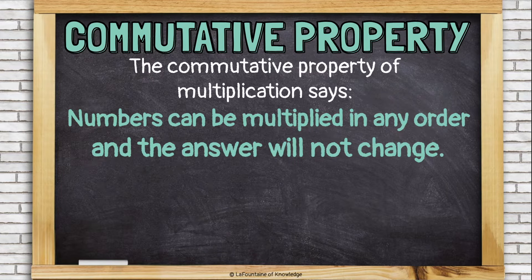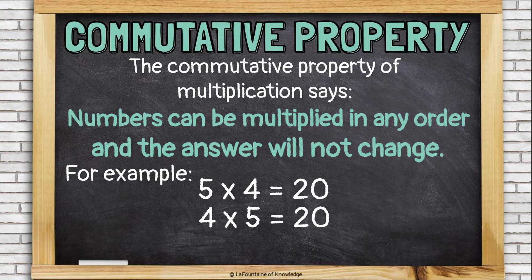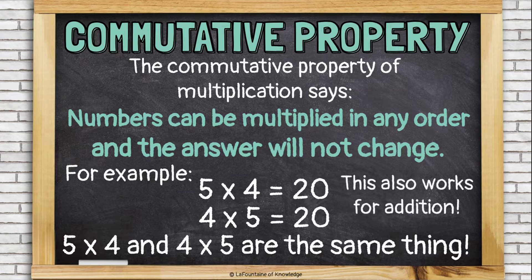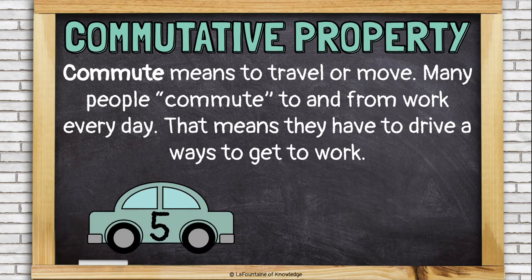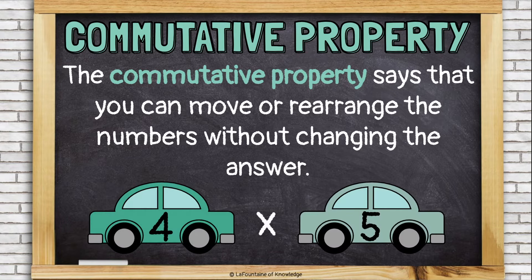The commutative property of multiplication says numbers can be multiplied in any order and the answer will not change. For example, five times four equals 20 and four times five equals 20. Five times four and four times five are the same thing, and that's because of the commutative property. This one also works for addition. Commute means to travel or move — many people commute to and from work every day, meaning they drive a ways to get to work. The commutative property says that you can move or rearrange the numbers without changing the answer.